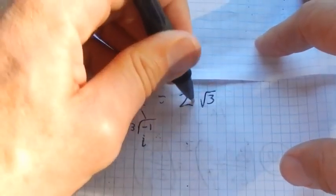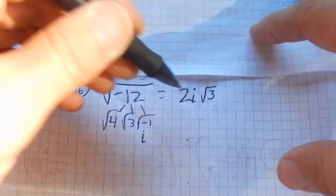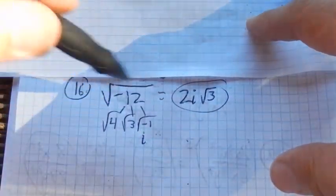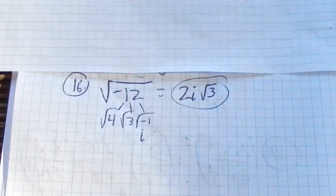So square root of 4 is 2. Square root of 3 is root 3. And the square root of negative 1 is i. Remember, by definition, that's what i means. So this is my simplified version of that.